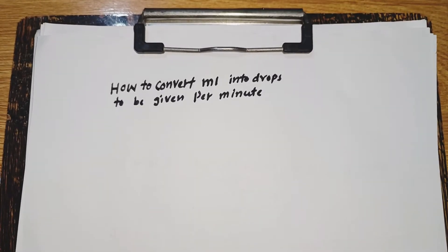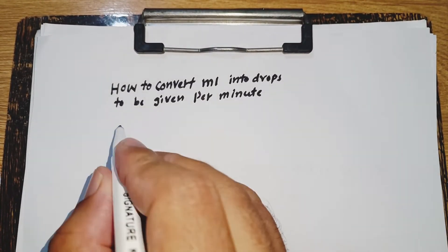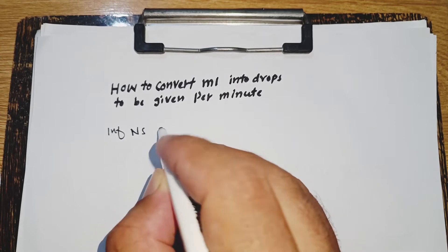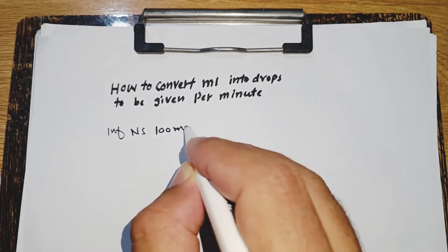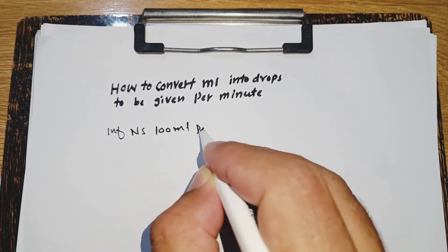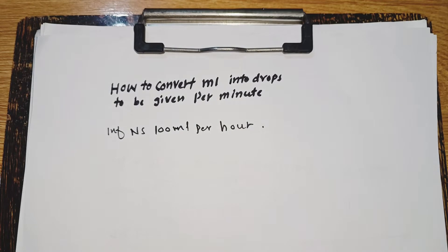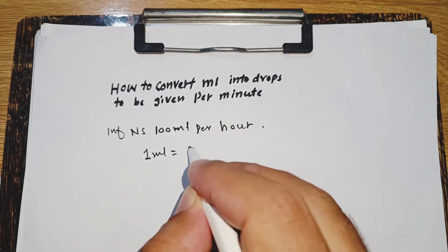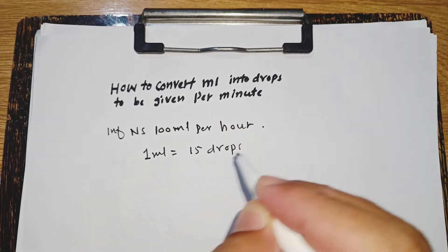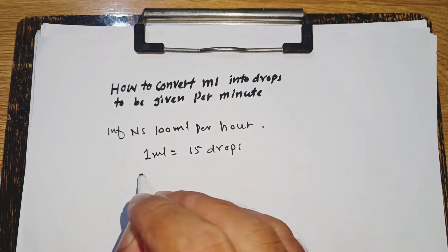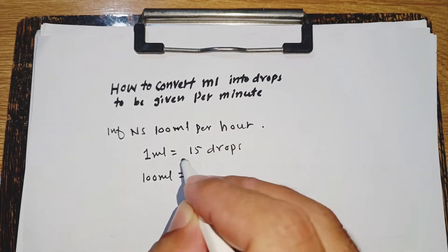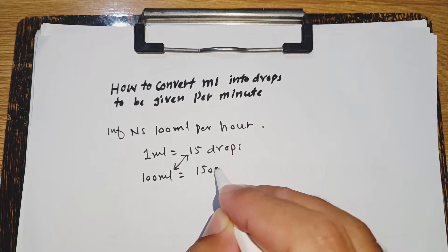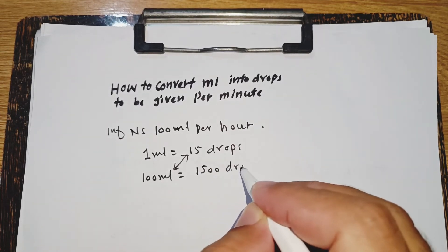Let's talk about how to convert milliliters into drops to be given per minute. For example, infusion normal saline 100 mL IV over one hour — how many drops per minute? One milliliter is equal to 15 drops, so 100 mL multiplied by 15 equals 1500 drops.